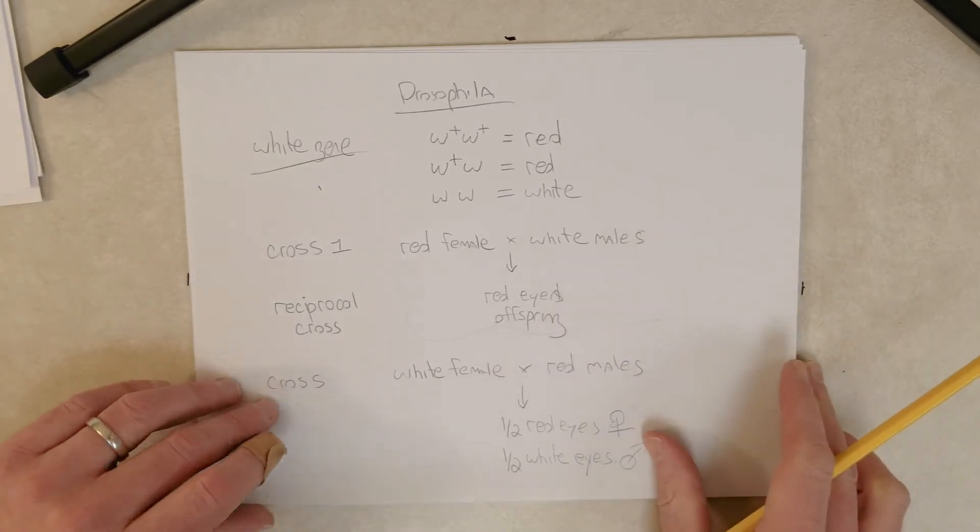So what's going on? Eventually, Morgan figured out that the white gene, this occurs because the white gene is on the X chromosome.